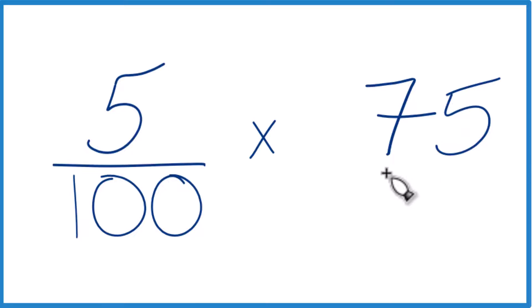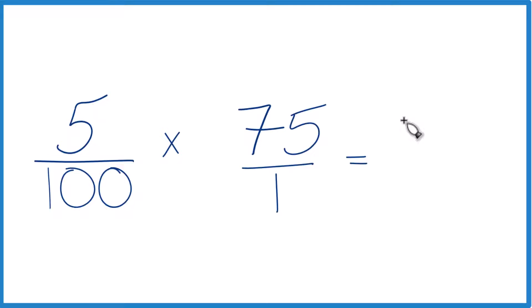You can think of this as 75 over 1, so the numerators and denominators line up. 5 times 75, that equals 375.